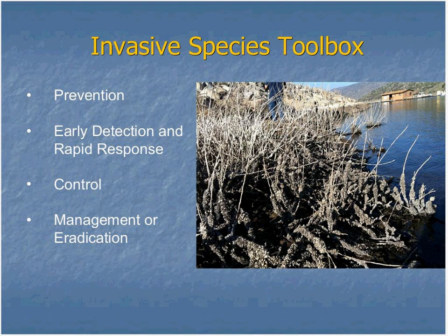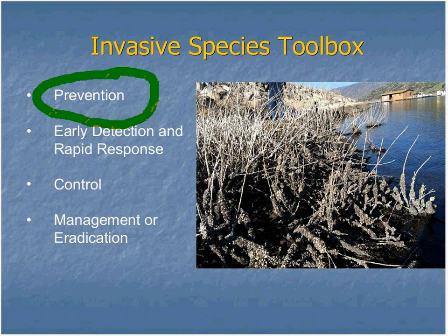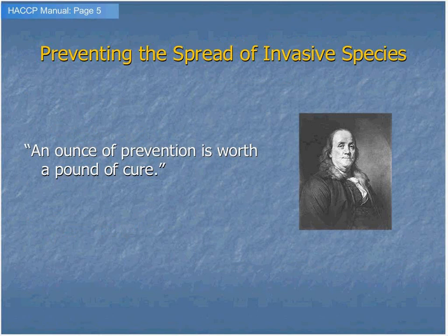I also like to reference what I call the Invasive Species Toolbox, which involves prevention — keeping them out of an area — early detection and rapid response, control, and then management or eradication. Our program gives information about all of these different aspects of the toolbox. However, today we're going to be focusing on the prevention aspect. An ounce of invasive prevention is worth a pound of cure, so it's really important to think about that.